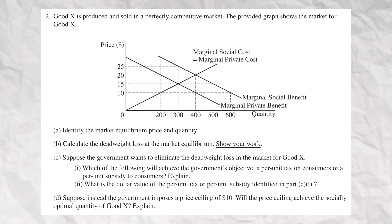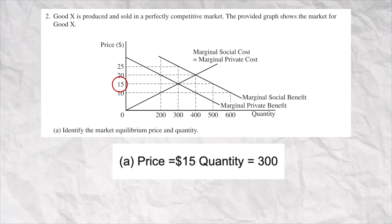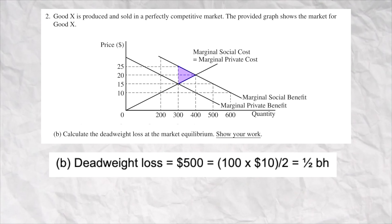Free response number two was a positive externality, and they gave you the graph. Part A is the easiest question on the AP exam — the price is 15 and the quantity is 300. That's where the marginal private benefit hits the marginal private cost. But the marginal social benefit hits the marginal social cost at 400 units, so this market is underproducing — it's a positive externality. The deadweight loss is right here: the equation for a triangle is one-half base times height. The base is 100, the height is 10, cut that in half, gives you 500.